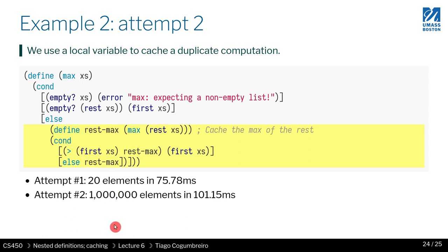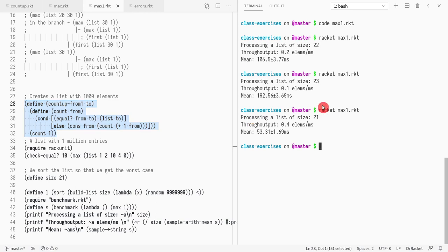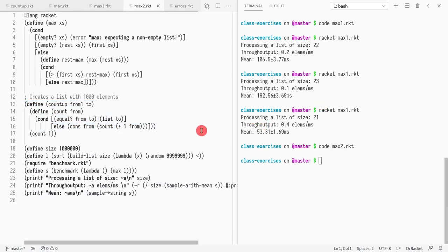And what we can see is that now, the time it took us to compute the max of 20 elements, now we can compute of a million elements. Wow, it's so fast. A bit longer, but you get the idea. So let me look at max2. Max2 has exactly this implementation that we see, that we saw. And if I run it,